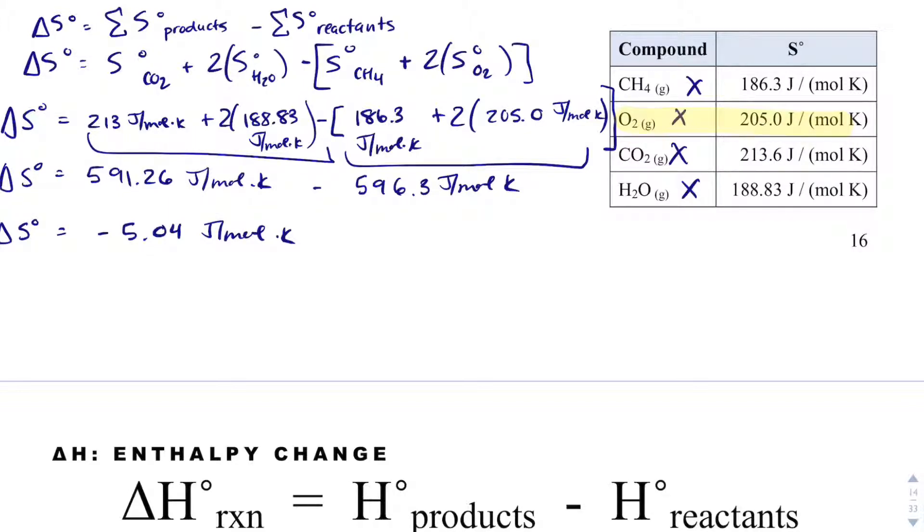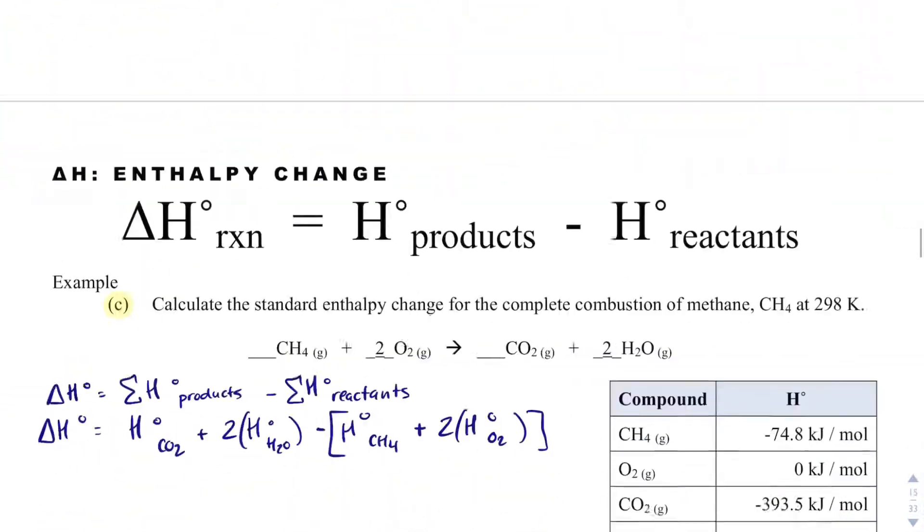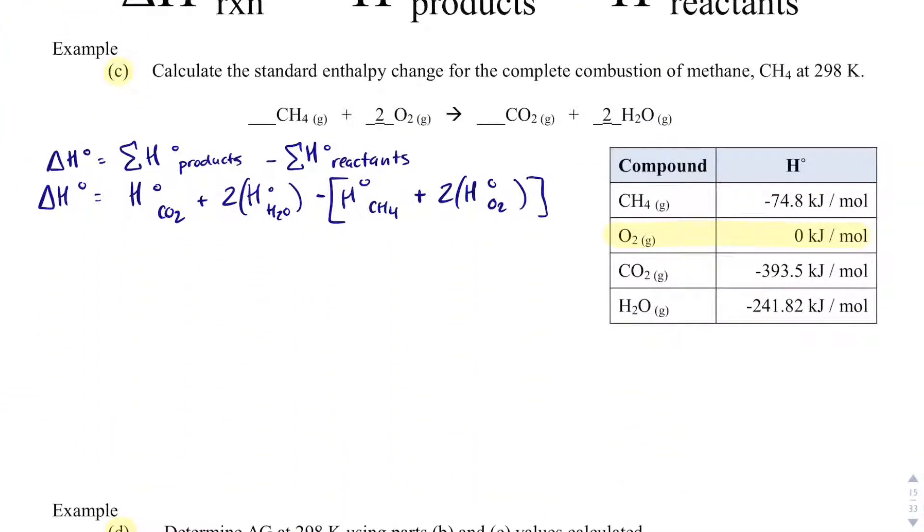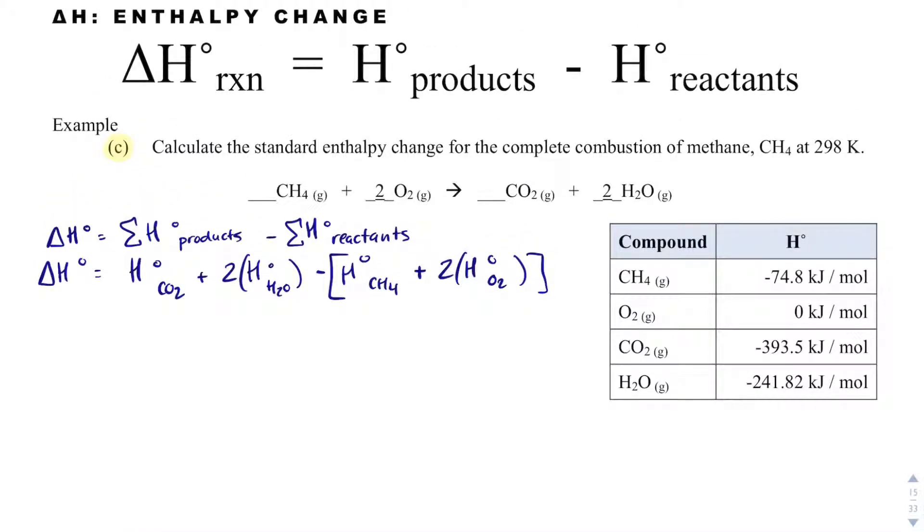That's because unless it's at 0 Kelvin, which it's not, it's going to have some disorder. But oxygen actually does not have a enthalpy value or a heat value because it doesn't take any heat to form. It just has formed. It's just like it doesn't take any energy, but it's going to have still some disorder to it. So that's why if you're wondering about that, it is like that.